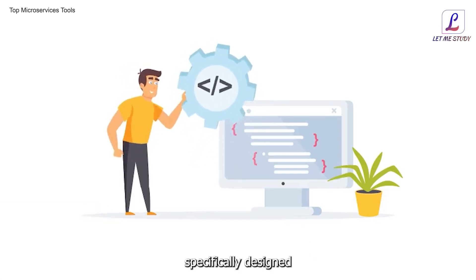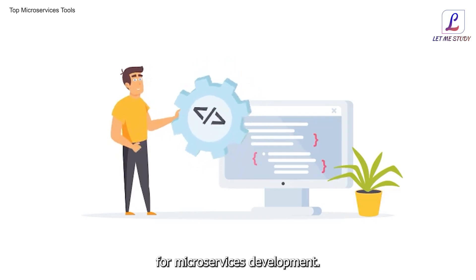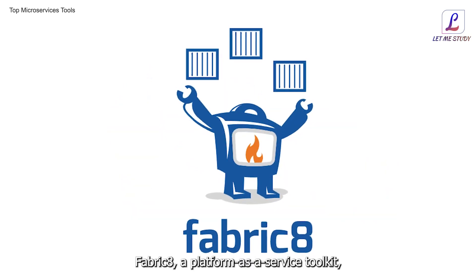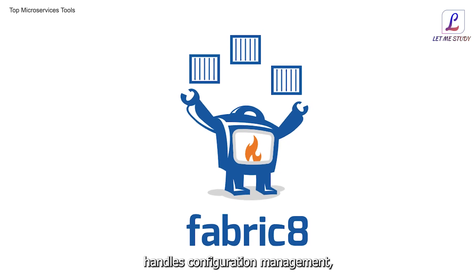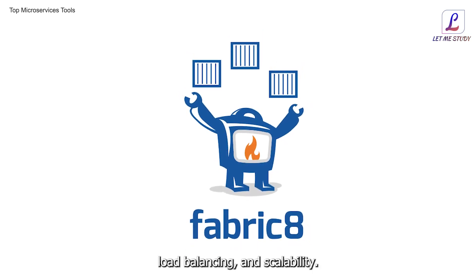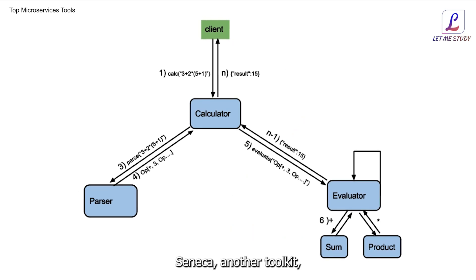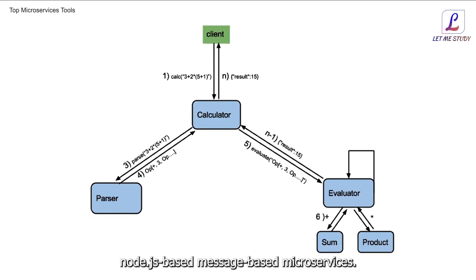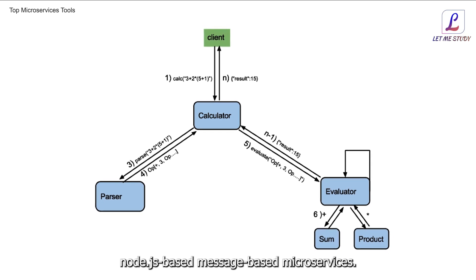Toolkits for microservices development: toolkits provide developers with a set of tools specifically designed for microservices development. Fabricate, a platform-as-a-service toolkit, handles configuration management, load balancing, and scalability. Seneca, another toolkit, is designed for building Node.js-based message-driven microservices. It promotes the creation of clean and organized code with systematic business logic.